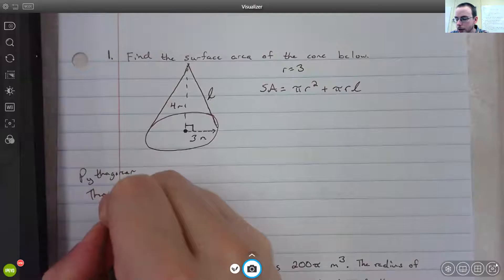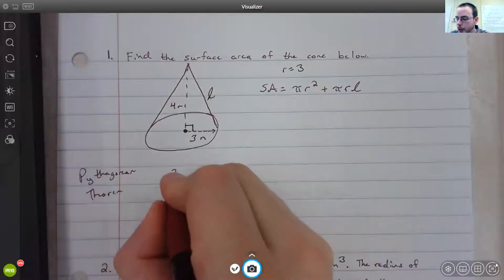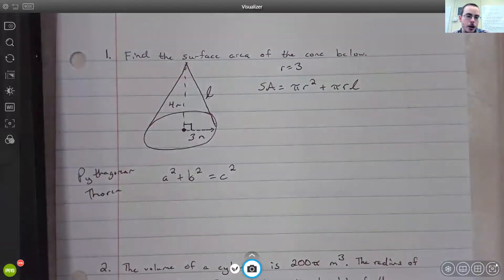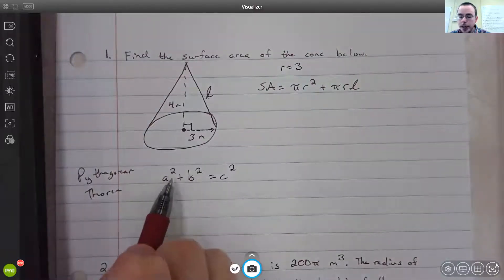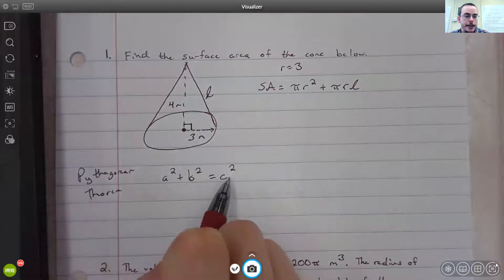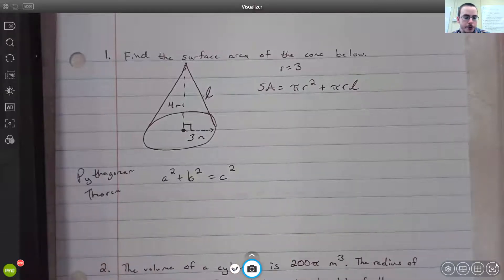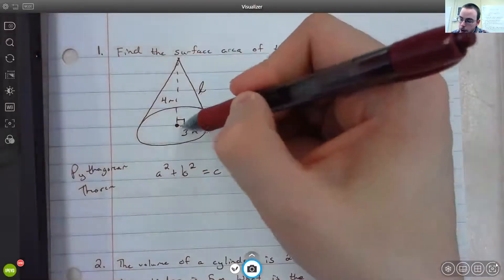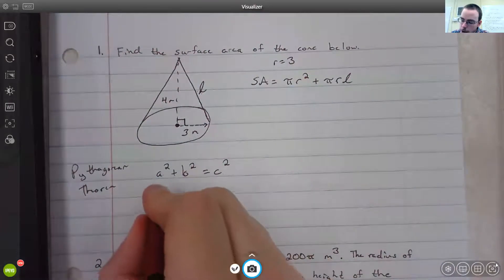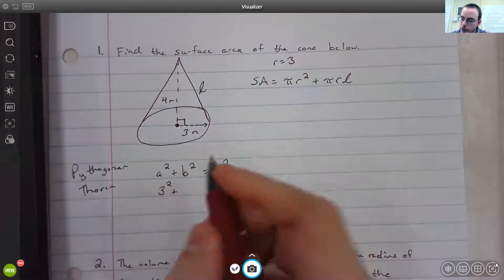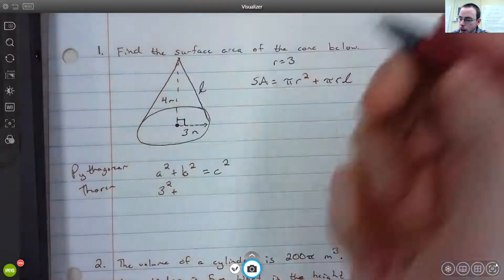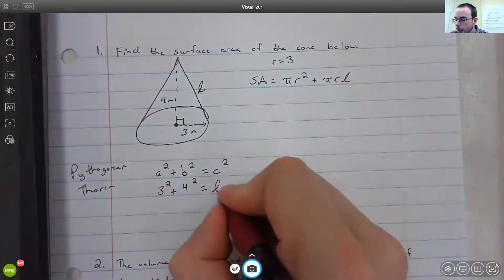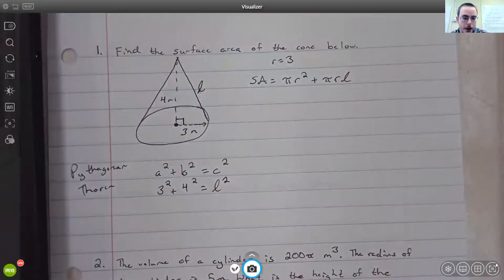Your Pythagorean theorem is given to you by a² + b² = c², where a and b are the legs of your right triangle and c is the hypotenuse. Here, if we look at our right triangle, we have 3 as one of our legs, so we have 3², and 4 is our other leg, so we have 4², and our slant length is our hypotenuse, so that would be l².